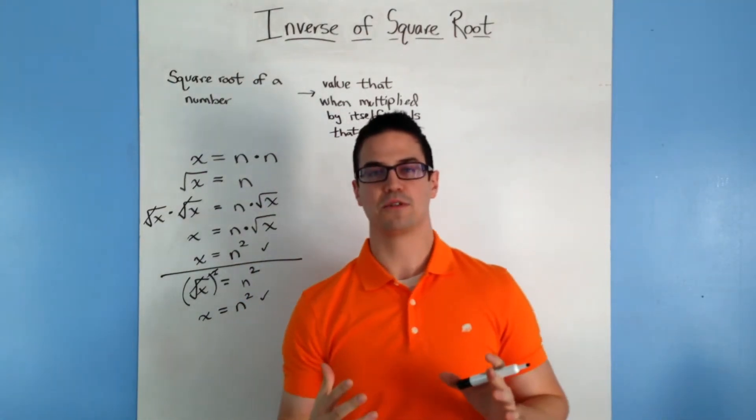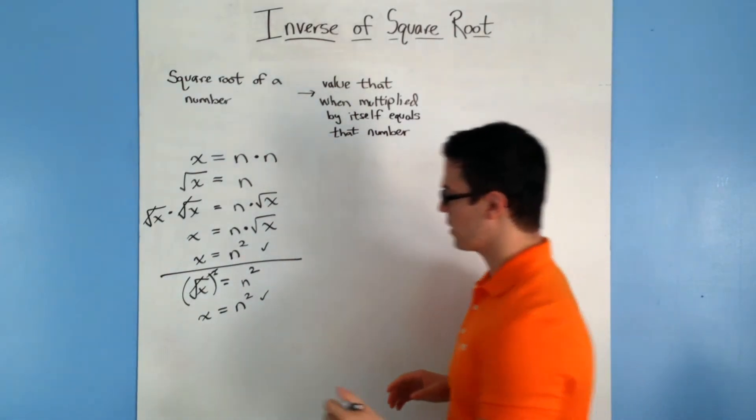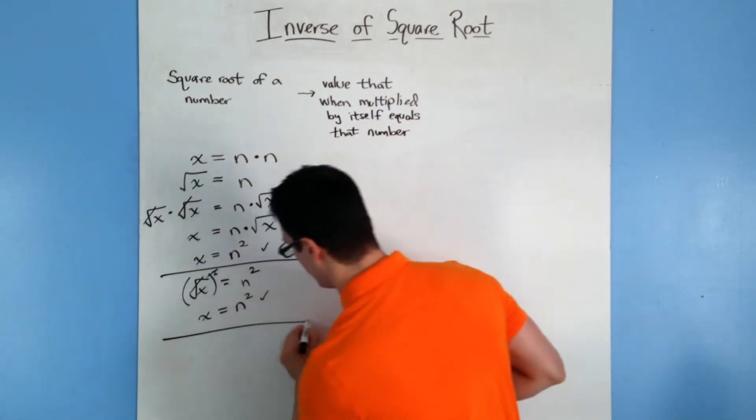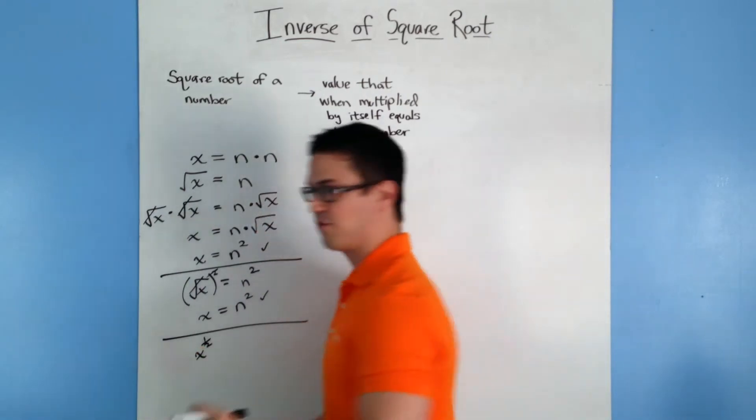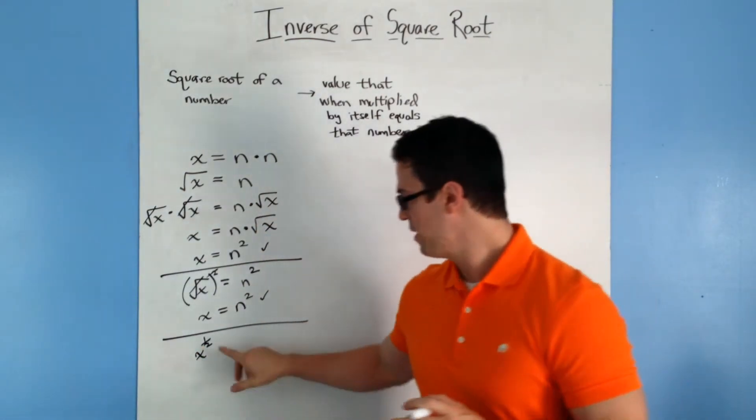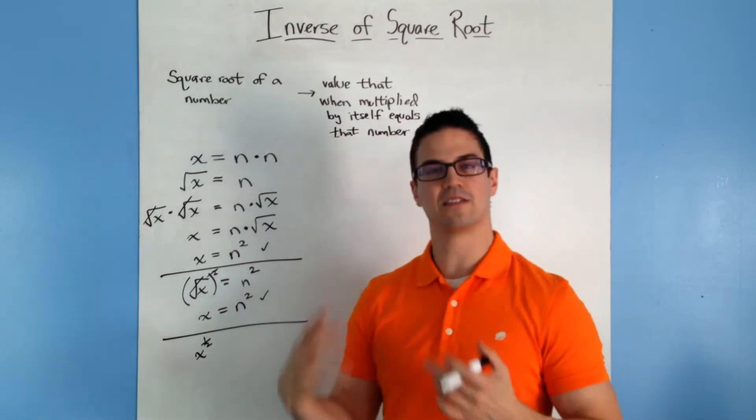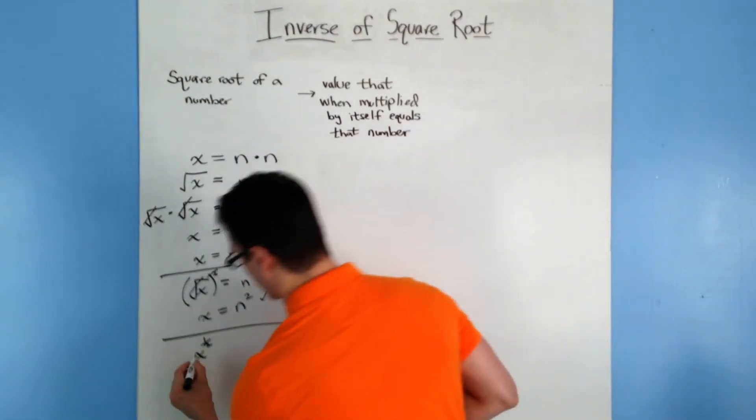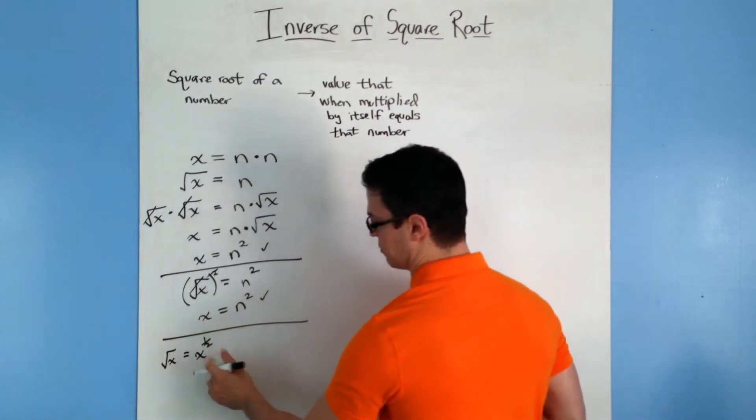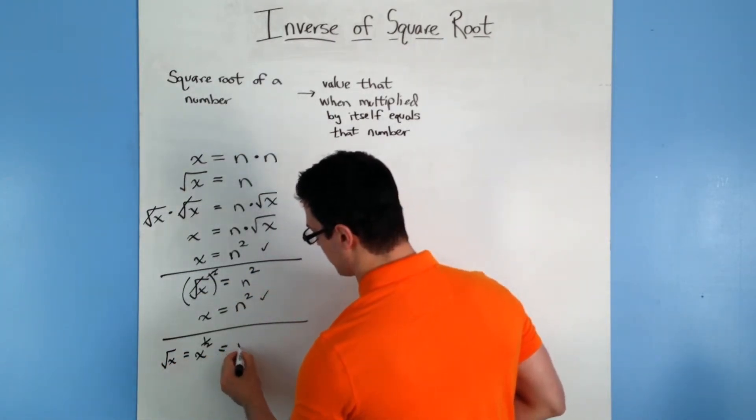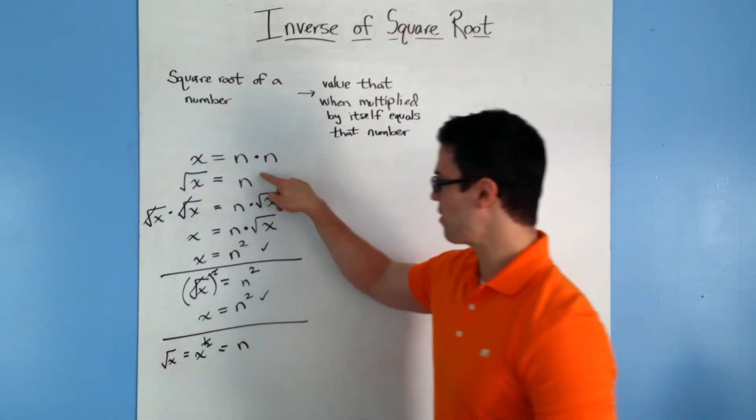Okay, the last way that I'm going to show you how to find the inverse of square roots is if you, instead of writing it as the square root of x, if you wrote x to the 1 half power. If you remember from our rational exponents unit, the x to the 1 half power is the same thing as the square root of x. So I'm going to actually write that here. The square root of x is equal to x to the 1 half power, which is equal to n. So we're starting from here again.